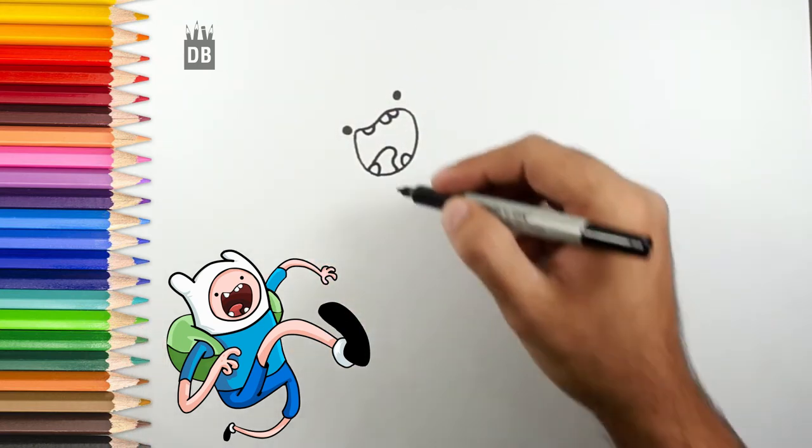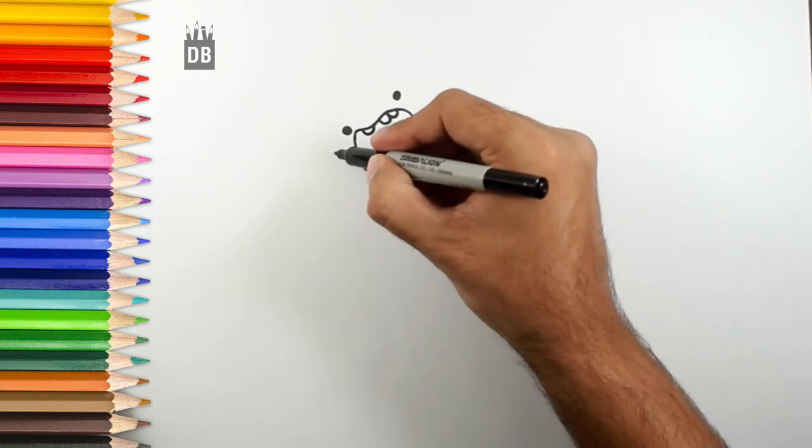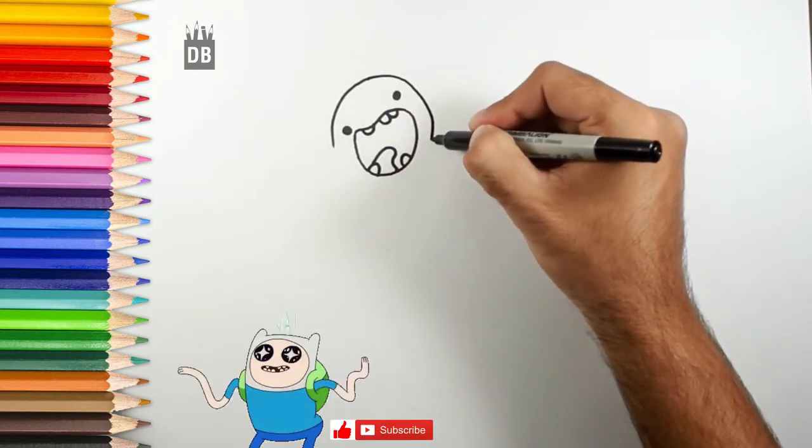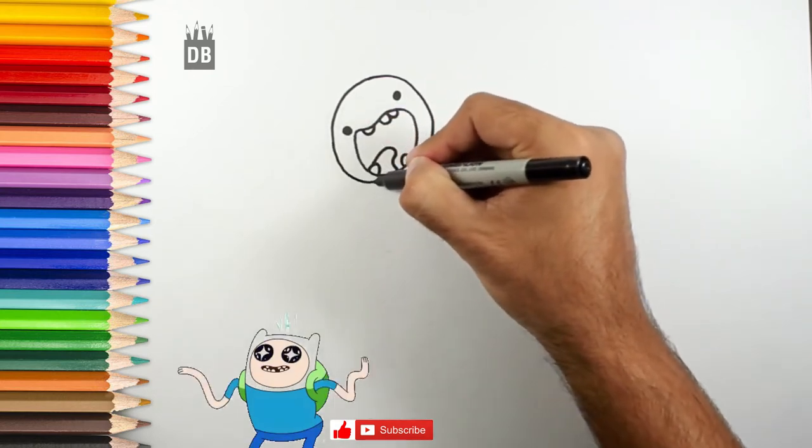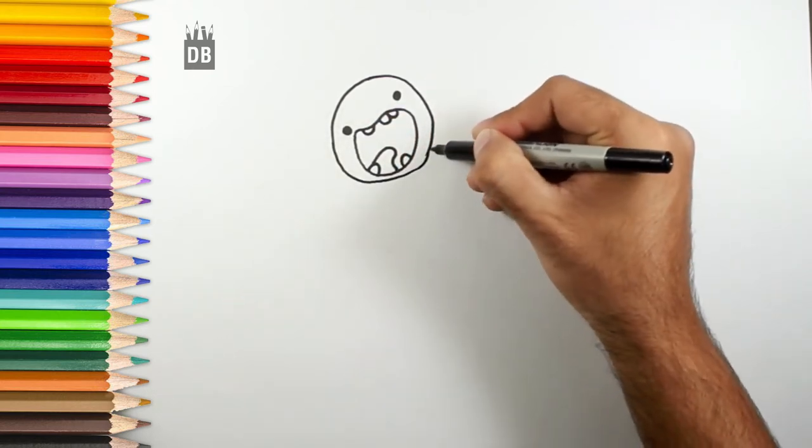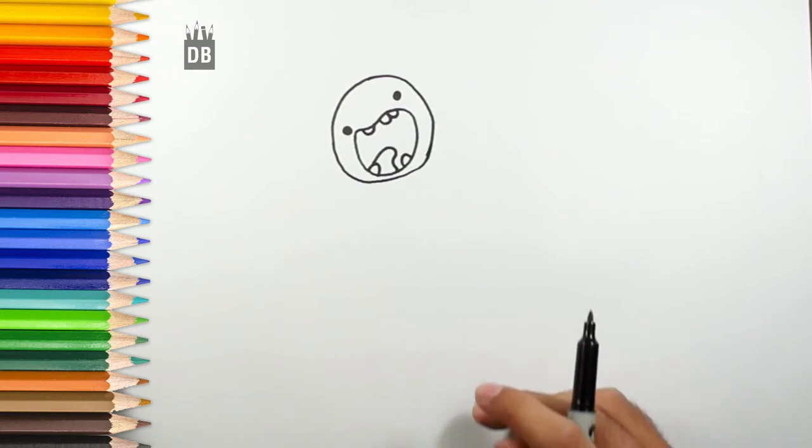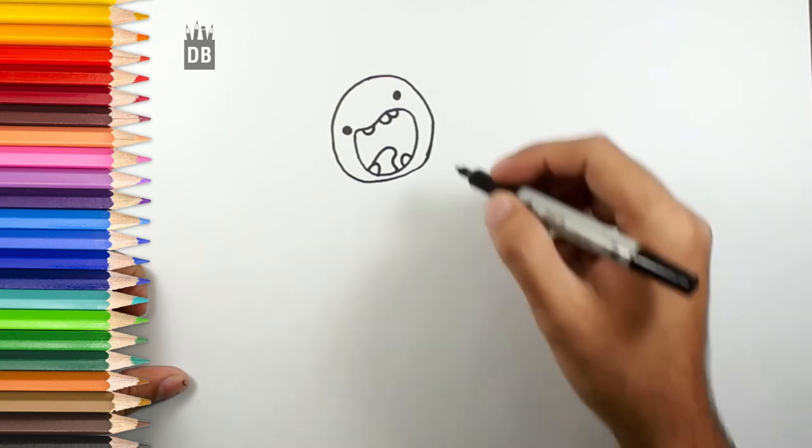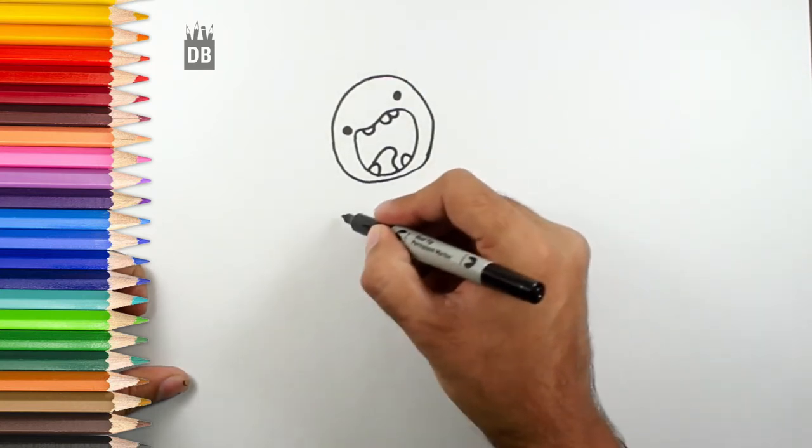Now we are going towards the outline of his face. It's in a round shape, so we will make it around like this. And his face is almost ready.